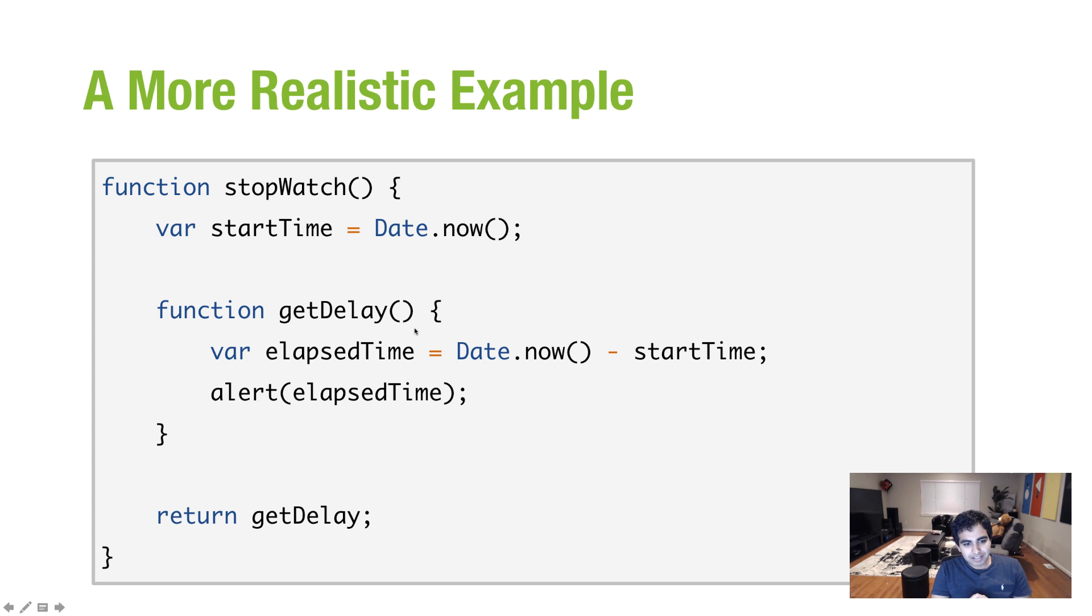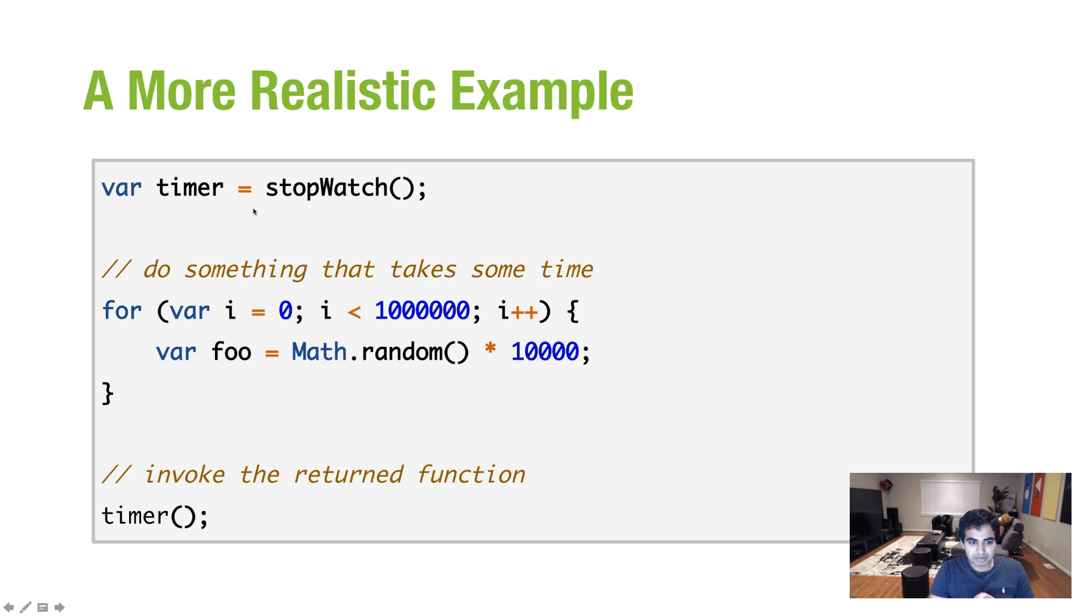And this stopwatch, I have a variable called startTime. And I'm initializing the value of date.now, basically the current time. And inside of it, we have an inner function called getDelay. Now, the interesting part of getDelay is that inside the getDelay function, we have another variable called elapsed time. And elapsed time is subtracting the current time from the value of startTime, which is, as you can see, declared by the stopwatch function outside of the getDelay function. And then I'm alerting the result of what getDelay prints out. But just like you saw with the earlier hello and goodbye functions, what I'm ultimately returning is the inner function, getDelay itself.